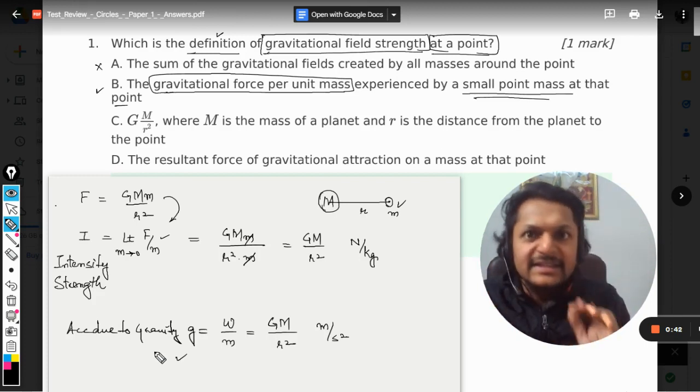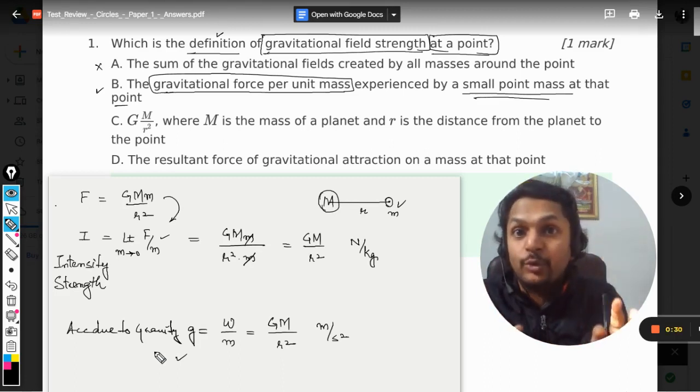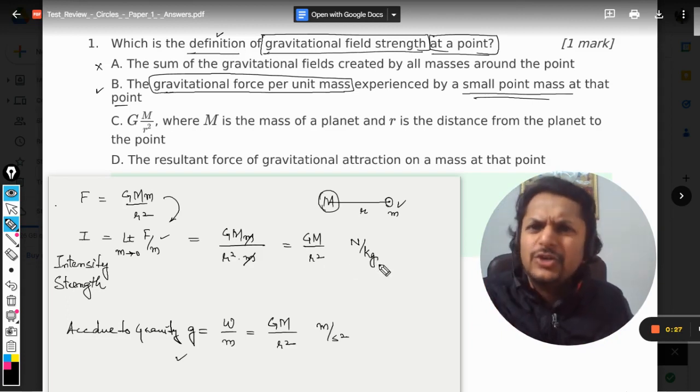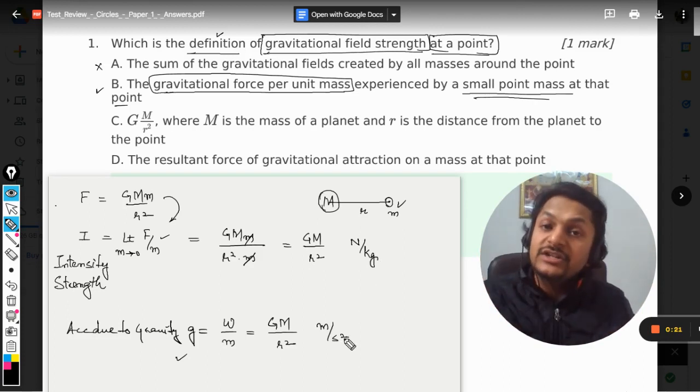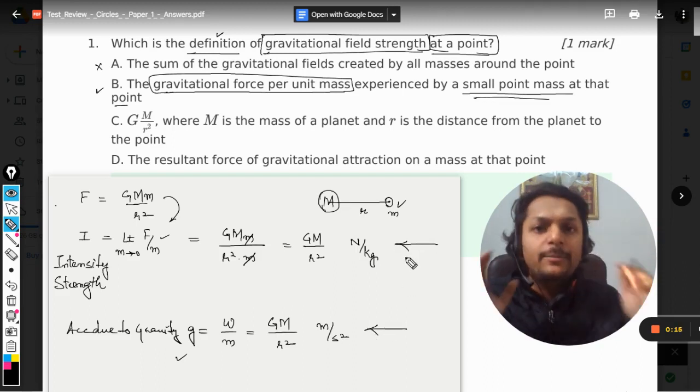But yes, they have the same formula and yes they have the same values. So on the earth's surface acceleration due to gravity is 9.8, so the intensity of the gravitational field is also 9.8. The only difference is you can say the units, but in many books also even the units are taken same, but I believe these are the correct units which define them properly. So this is acceleration due to gravity and this is force per unit mass, a characteristic of the gravitational field.